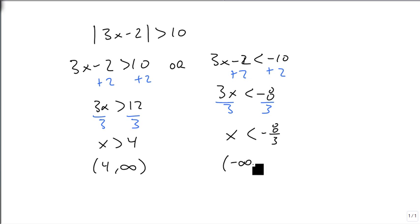or minus infinity to minus 8 over 3. Again, without any overlap, this just becomes minus infinity to minus 8 thirds, union 4 to infinity.